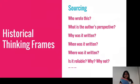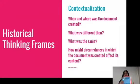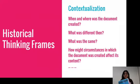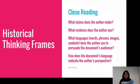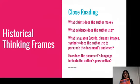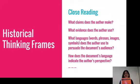Then we switch to contextualizing: when and where was the document created, what was different then, what was the same, and how might the circumstances in which it was created affect its content? Then we move to close reading, where we ask what claims the author makes, what evidence the author uses, and what language, words, phrases, images, and symbols the author uses to persuade the audience — and how the document's language indicates the author's perspective.